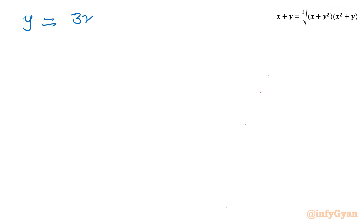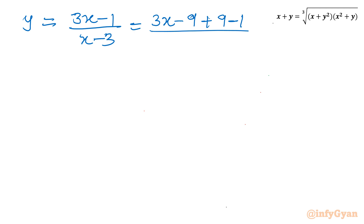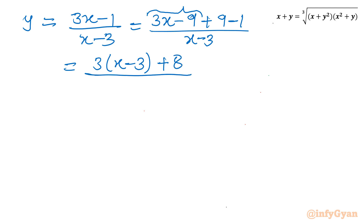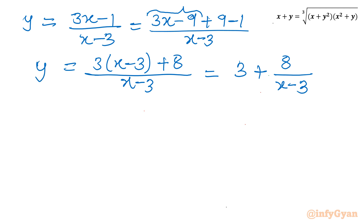Now simplify y = (3x − 1) / (x − 3). Rewrite the numerator as 3x − 9 + 8 (subtracting 9 and adding 9 back). This gives (3(x − 3) + 8) / (x − 3), which simplifies to y = 3 + 8/(x − 3). This is our expression for y.